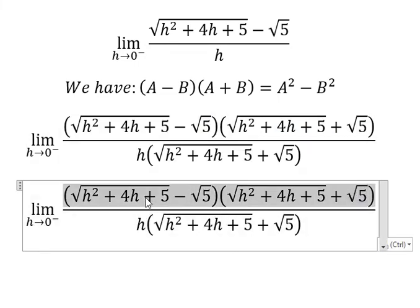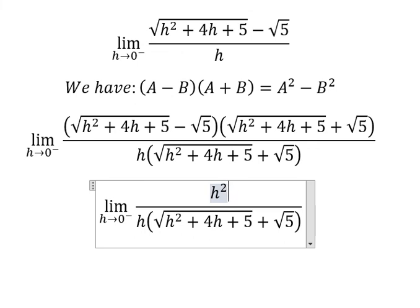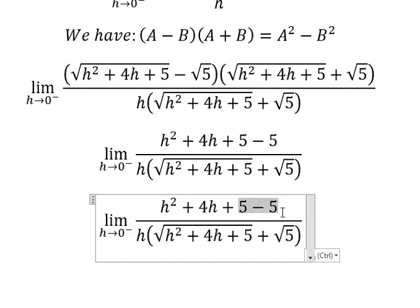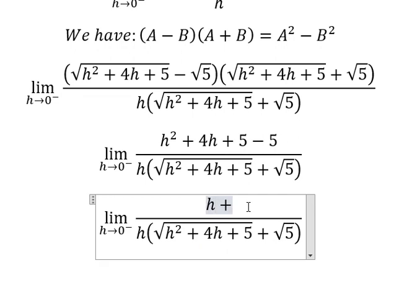So here we have h square plus 4h plus 5 minus 5. The 5 minus 5 cancel, and h divides out, so we have h plus 4.